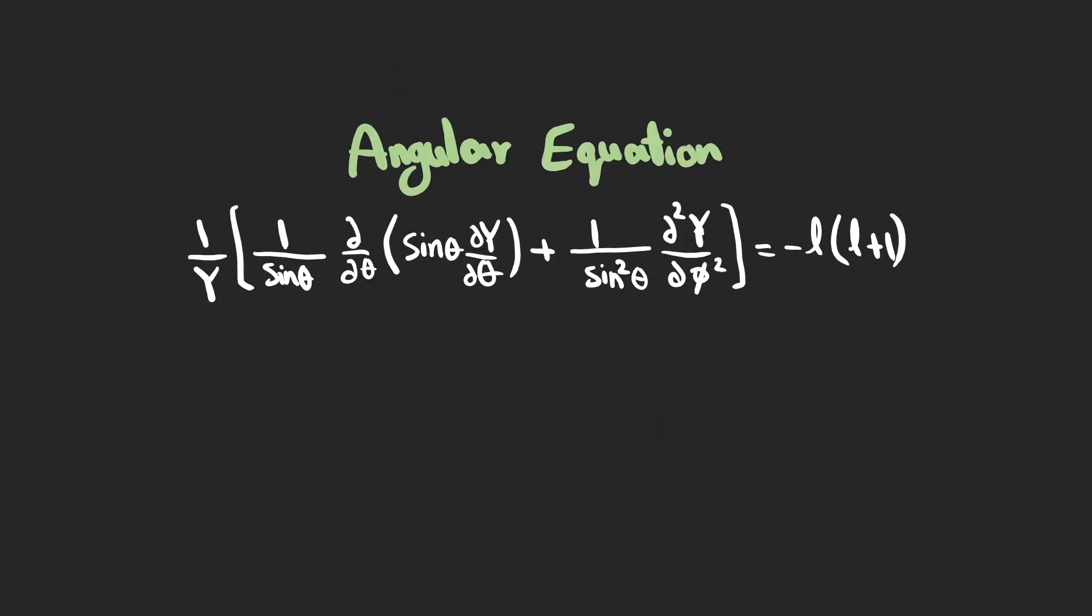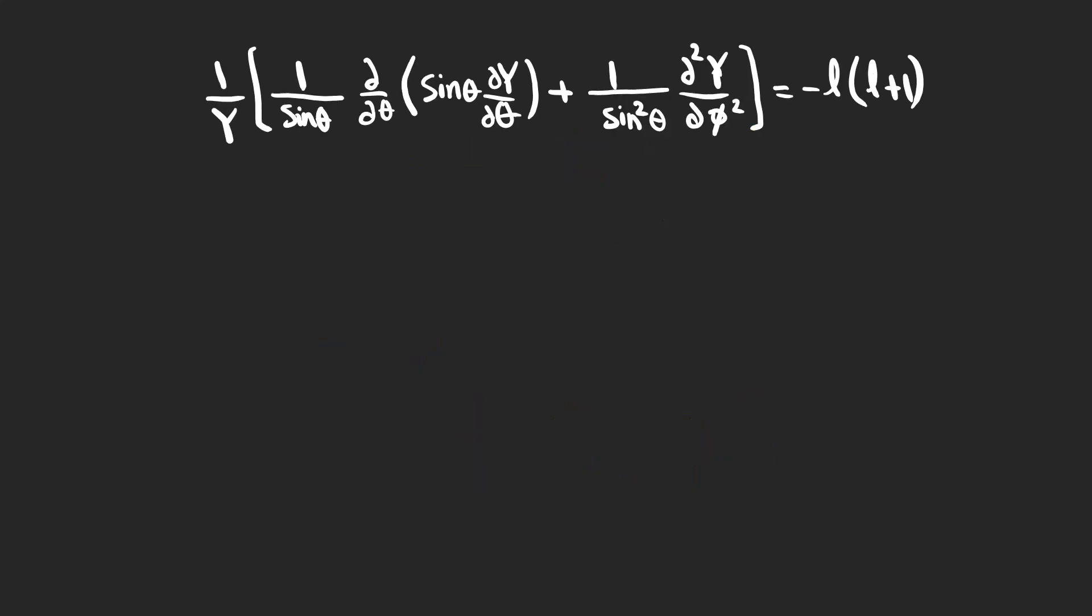In this video we are going to focus on the angular equation, solve it and see what it shows. We want to find an expression that shows all the possible angles in which the possibility of finding the particle is higher. Y is the function that shows these probabilities. Now let's find the possible angles at which we might find our particle.